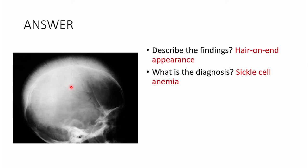In this image you can see spikes that make the skull appear as if it has hair — this is due to accentuation of the trabeculae in the bones of the skull because of extramedullary hematopoiesis. This is referred to as a hair-on-end appearance. The most likely diagnosis is sickle cell anemia, though any hemolytic anemia could lead to this appearance.